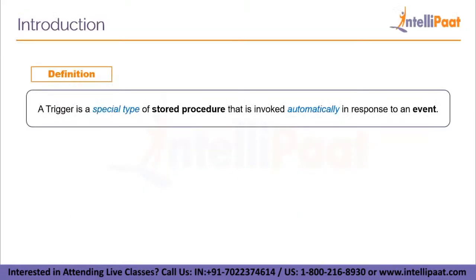This is a formal definition of a trigger: a trigger is a special type of stored procedure that is invoked automatically in response to an event. A stored procedure is a set of SQL statements — usually a query — that you can save so that the code can be reused over and over again. It is like a function in a programming language. An event here refers to a data modification made against a table — that is, if you make any changes to a table in a database, that is called an event.